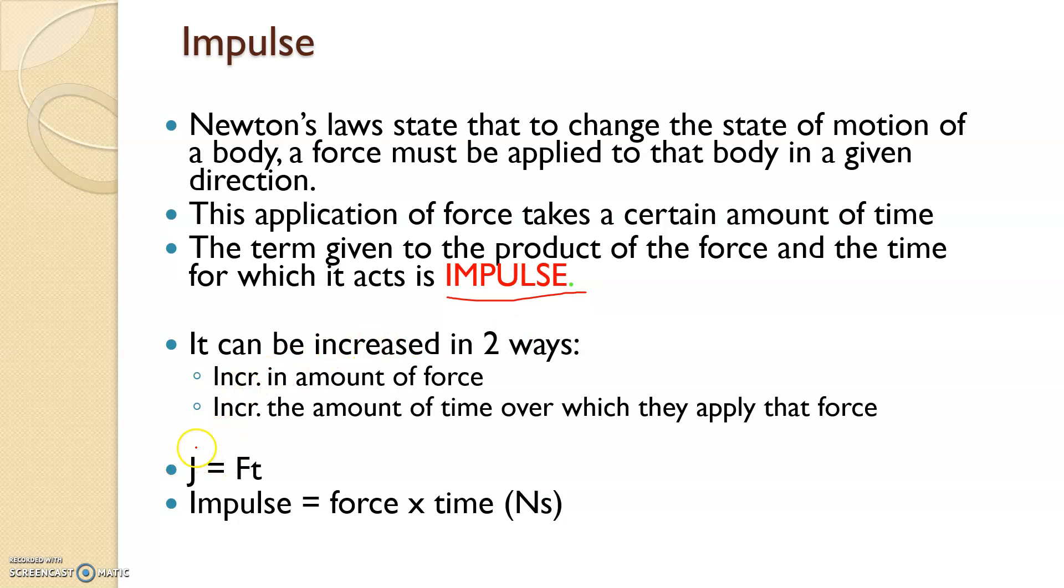So impulse, given by J, is force times time and it is given in Newton seconds. The ways we can increase impulse is through the amount of force we hit it with, or we can increase the amount of time we are in contact with that body.